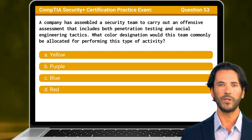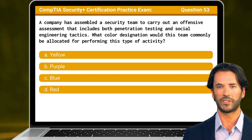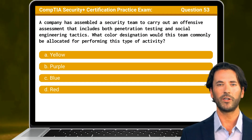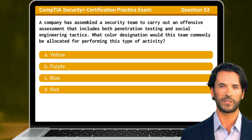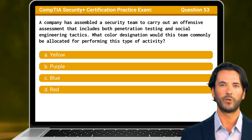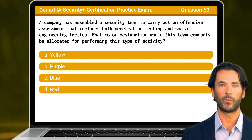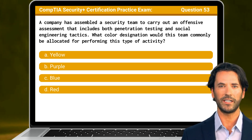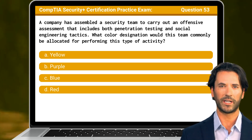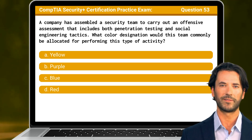Question 53. A company has assembled a security team to carry out an offensive assessment that includes both penetration testing and social engineering tactics. What color designation would this team commonly be allocated for performing this type of activity?